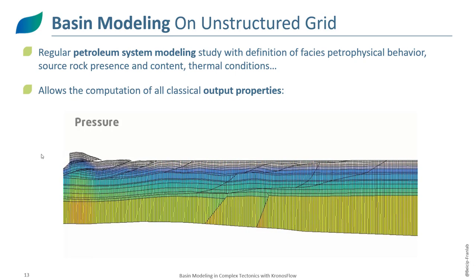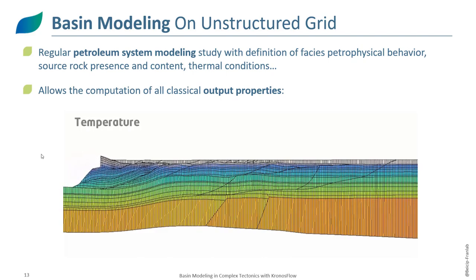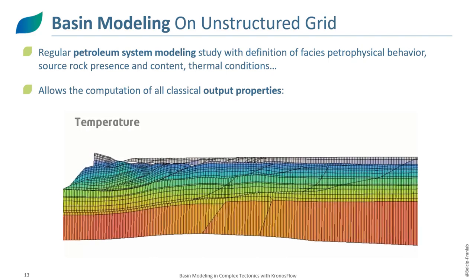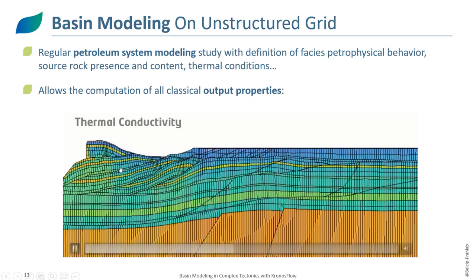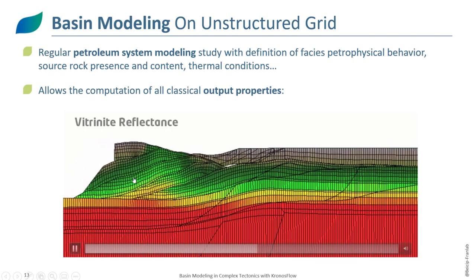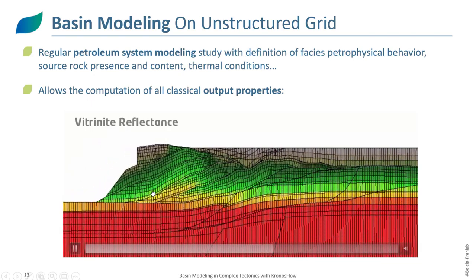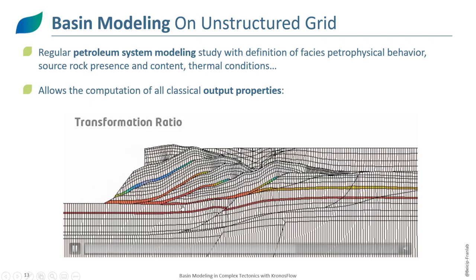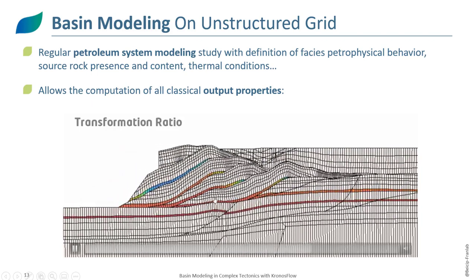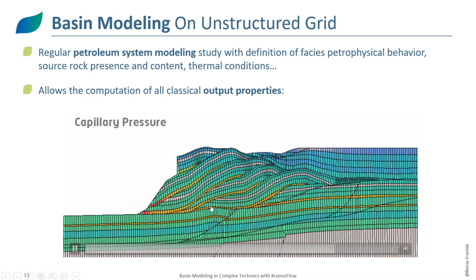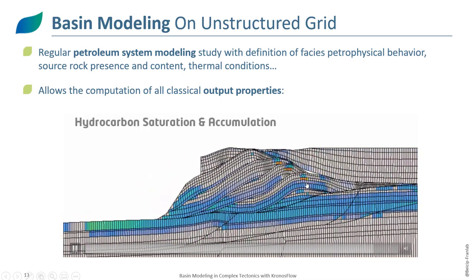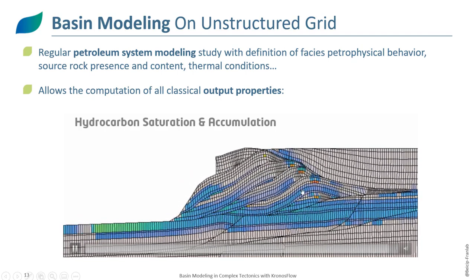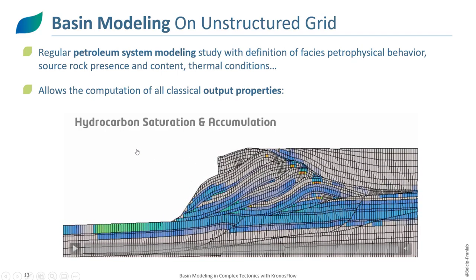When that mesh is computed, we can perform a classic basin modeling forward simulation — defining the petrophysical behavior of the facies, source rocks, and thermal conditions through time. We can compute output properties such as temperature, thermal conductivity, vitrinite reflectance, transformation ratio in the source rock, capillary pressure driving migration, and hydrocarbon saturation, allowing us to identify our main accumulations.